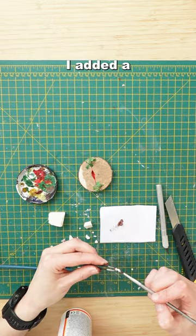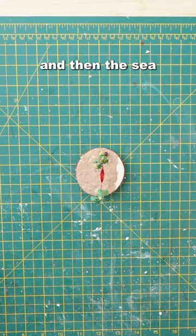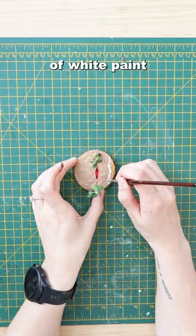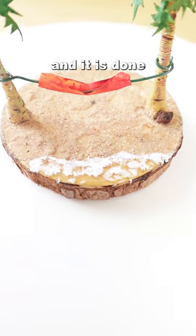Then there was a base of sand for the beach, I added a teeny coconut and then the sea, this was some UV resin and then bits of white paint to show the waves and it is done.